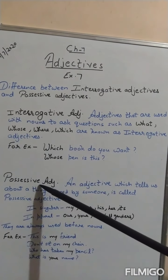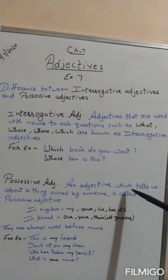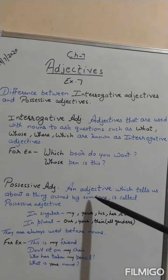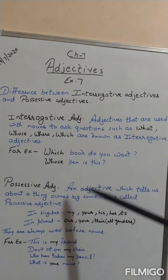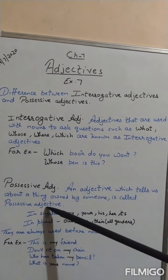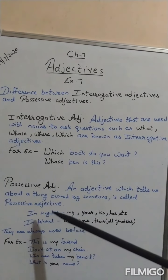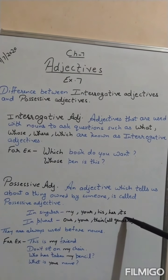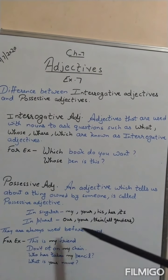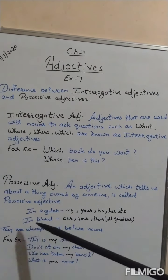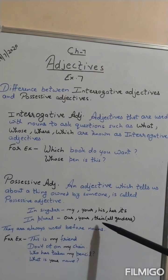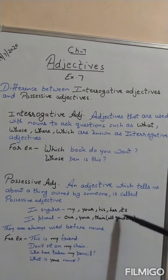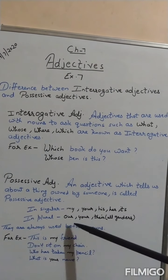Now see what is a possessive adjective. An adjective which tells us about a thing owned by someone is called a possessive adjective. In singular: my, your, his, her, its — all these are possessive adjectives. In plural: our, your, their. 'Their' is used for all genders. So these are possessive adjectives.